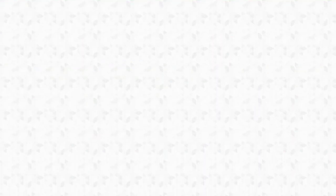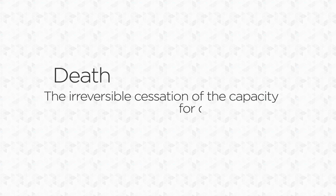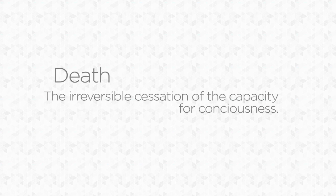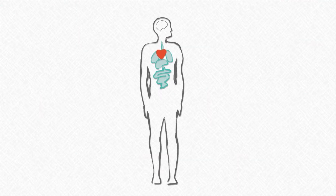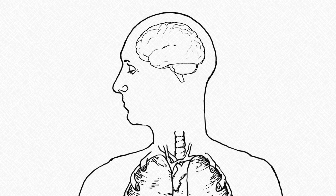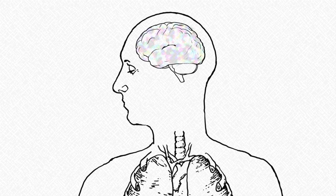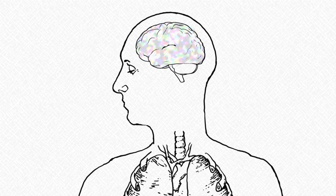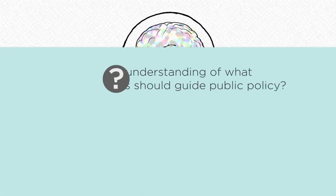On the view that has been called the higher brain death conception, death just is the irreversible cessation of the capacity for consciousness. A human body in a provably permanent vegetative state is not a living human being in any morally relevant sense. Now, the terminology here may be a little misleading. To be alive on this view, an individual need not exhibit higher levels of intelligence or deeper wisdom. What matters is that the upper or higher part of the brain, the cerebral cortex, is sufficiently functional to support at least a modicum of conscious awareness. So which understanding of what death is should guide public policy? Try to elaborate your own critically reflective conclusions about this critically important matter.